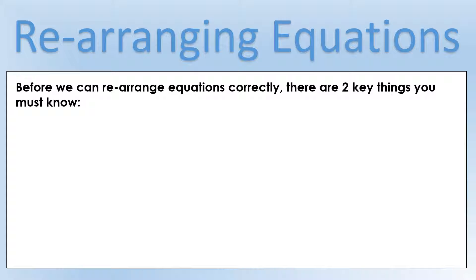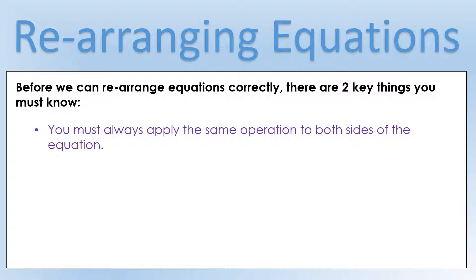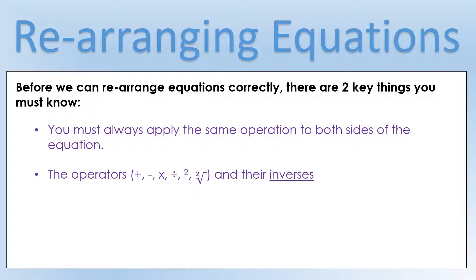Before we get started, there are two things we need to know about rearranging equations. The first is you must always apply the same operation to both sides — if we multiply one side by two, we have to multiply the other side by two, or if we square root one side we have to square root the other. The second thing is you need to know the operators and their inverses, because that's key in deciding what to do to rearrange equations.